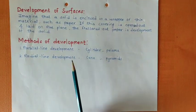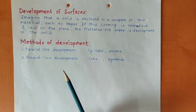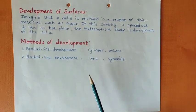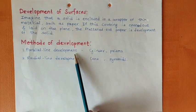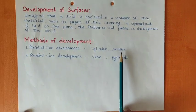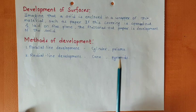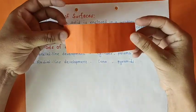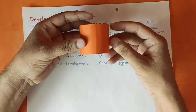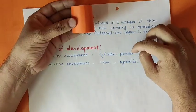When we talk about development, there are some methods of development, out of which we have two in the syllabus. The first method is parallel line development, and this development we can see in case of cylinder and prism. If we have a paper wrapped around a cylinder and open this paper and put it on a flat surface, this development is called parallel line development, observed in case of cylinder and prism.